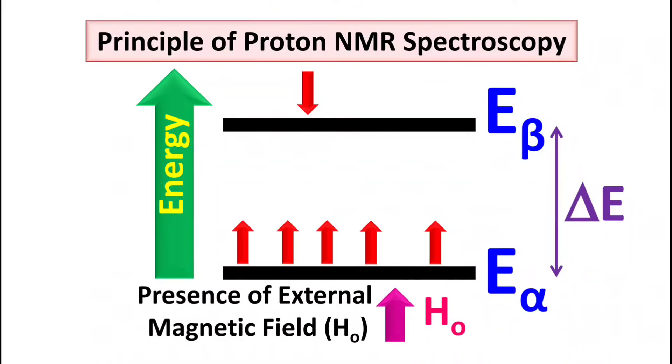On the other hand, the E-beta nuclei has anti-parallel spin. Basically, the E-alpha is in lower energy and E-beta is having the higher energy level. So you can see that the moment you start the magnetic field they get split into two different energy levels.